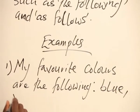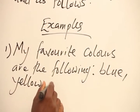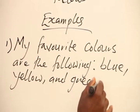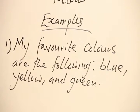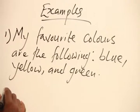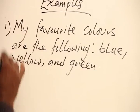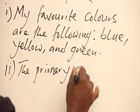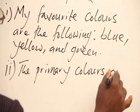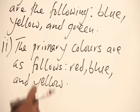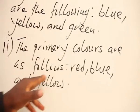For example: Blue, Yellow, Green. Now we can leave this as it is. Another example that uses 'as follows': Primary colors are as follows. Now, these are two examples — 'the following' and 'as follows' — that we typically use a colon after.